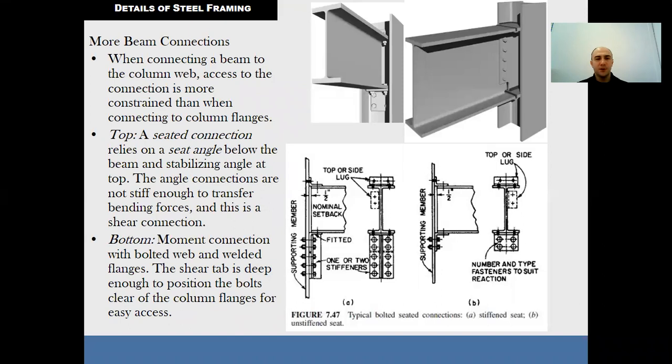In picture 7.47, we can find stiffened seat connections. This connection is shown in A, and unstiffened seats are shown in B. On unstiffened seats, the capacity is limited by the bending strength of the outstanding horizontal leg of the seat angle. In general, four inches is a practical limit for the unstiffened seat. This may be obtained with one or two stiffened angles depending on the load to be supported.